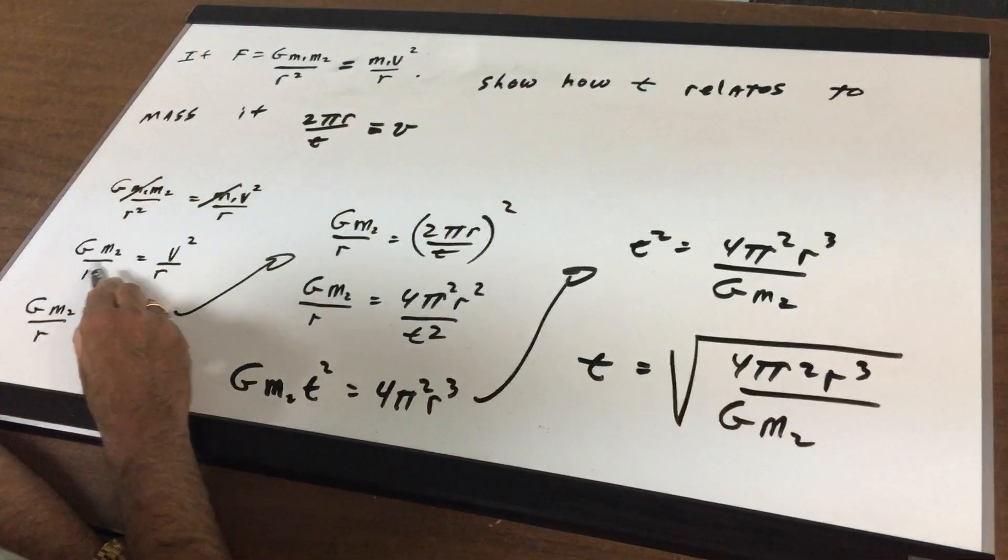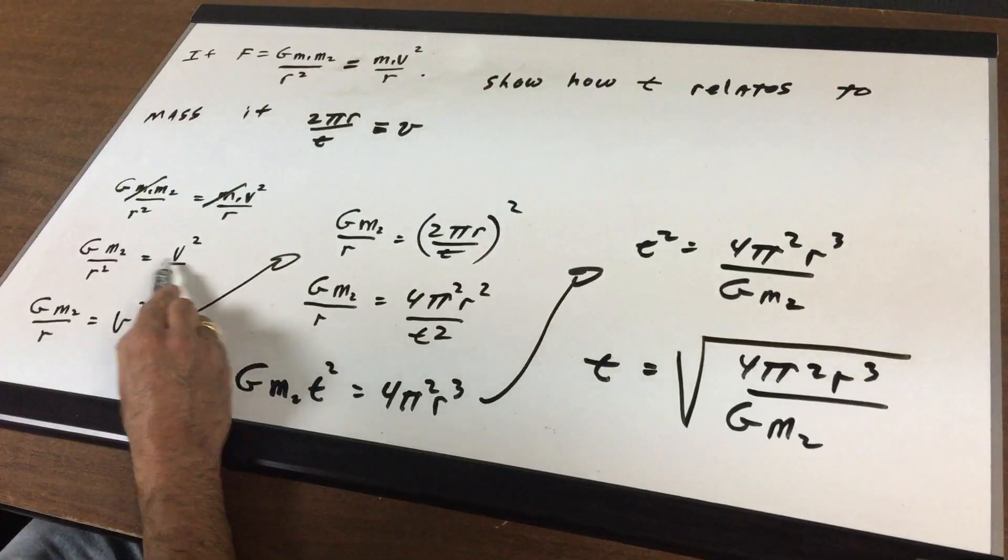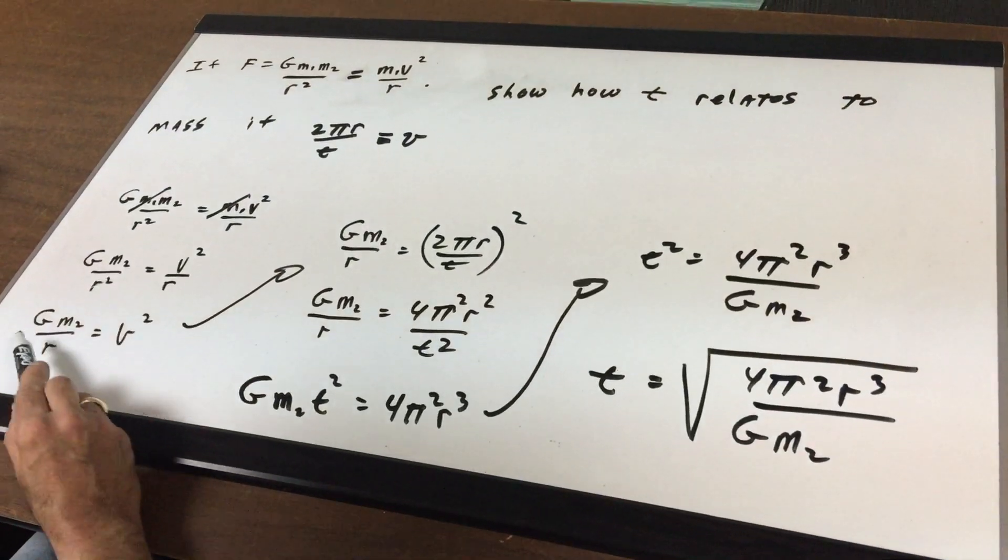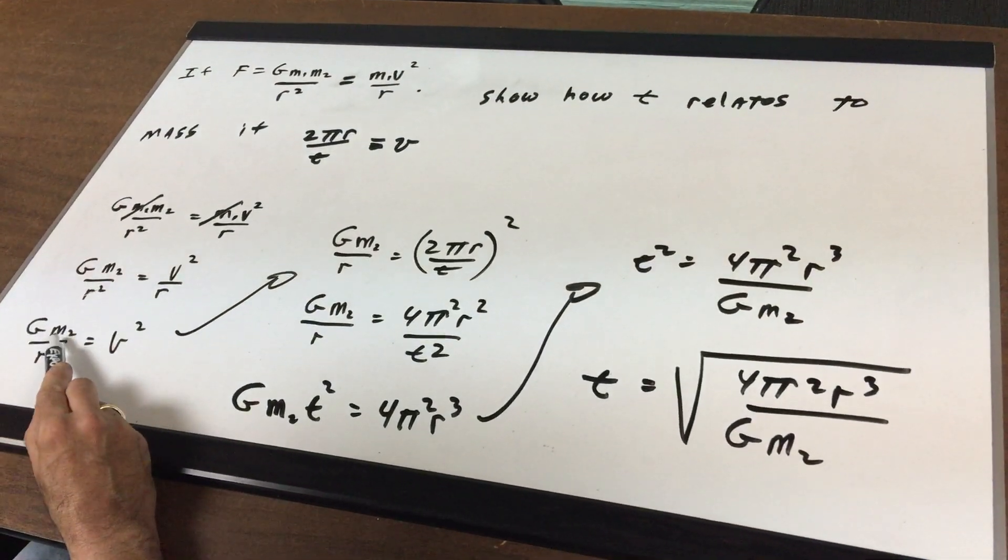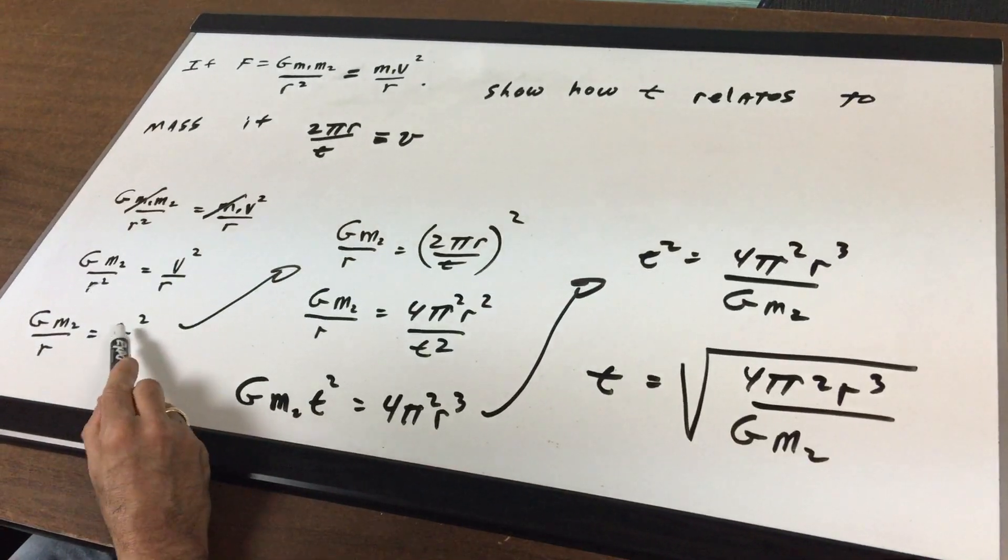Well, since both of these have r in it, I'm going to knock out the r on this side and knock out one of the r's to give me g m2 r equals v squared.